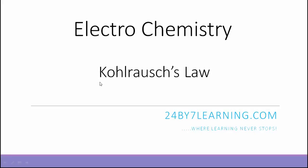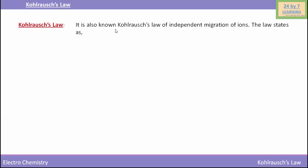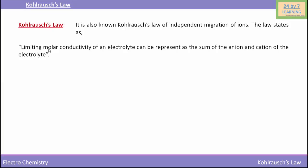Hello students, in this video we are going to discuss about Kohlrausch's law, also known as Kohlrausch's law of independent migration of ions. This law states that the limiting molar conductivity of an electrolyte can be represented as the sum of the anion and cation conductivities of the electrolyte.